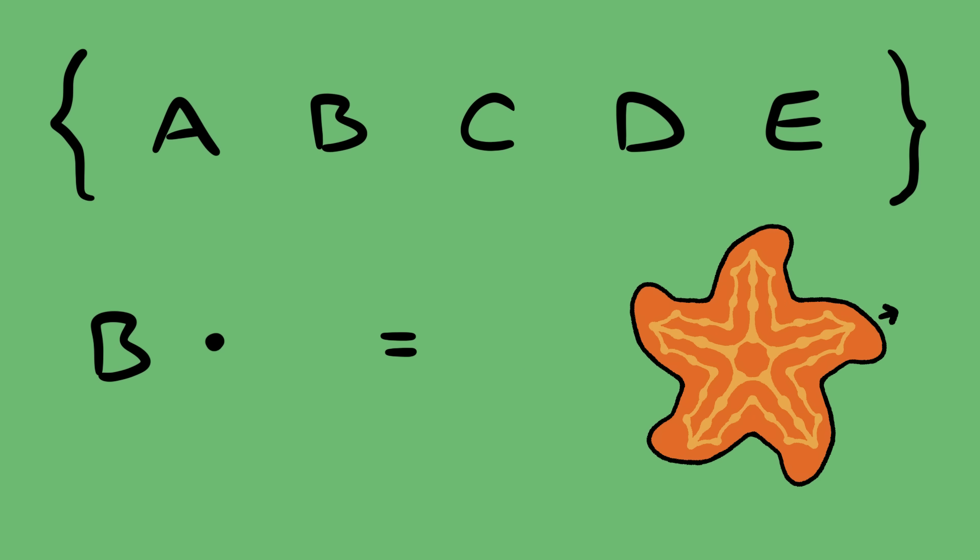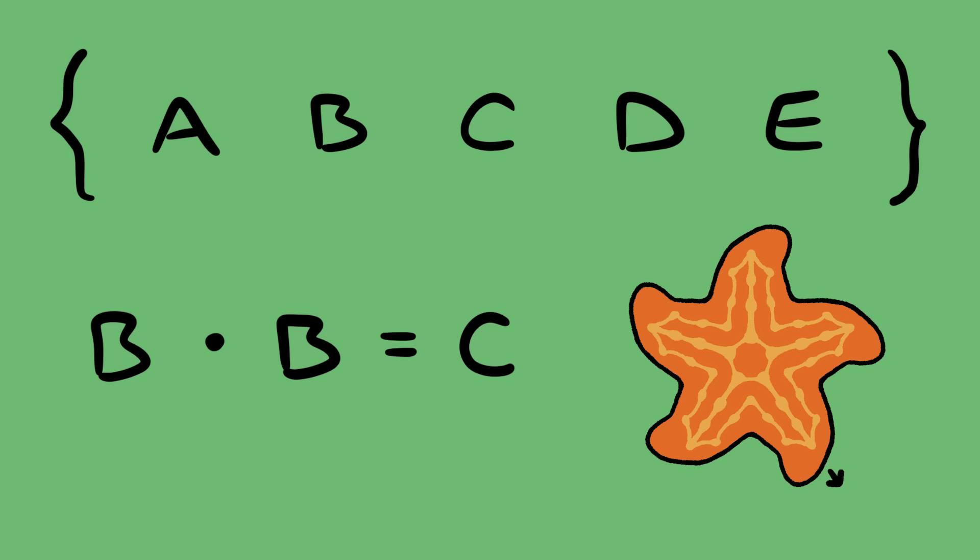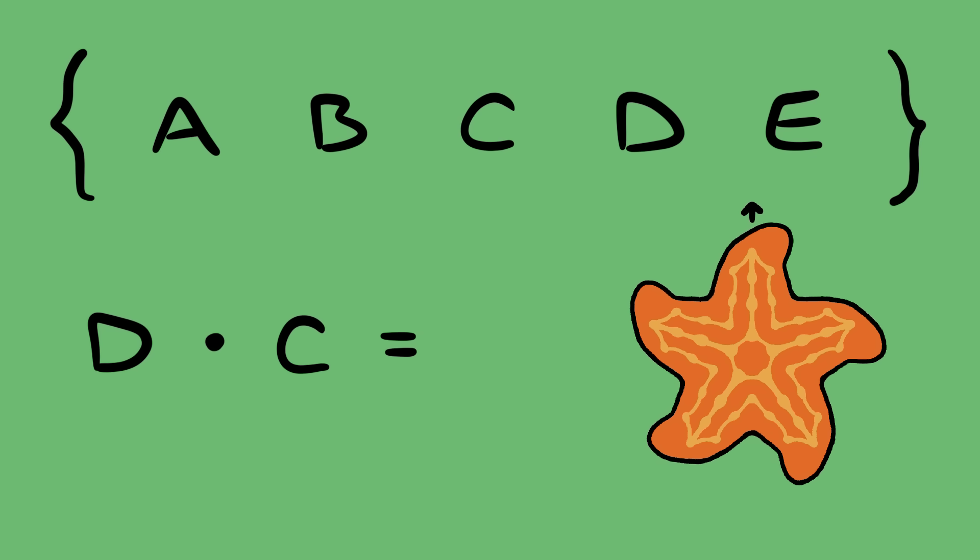That means that starfish B composed with starfish B gets us starfish C. D composed with C wraps around and gets us back to A. I'm sure if I tested you on other compositions you could figure it out.